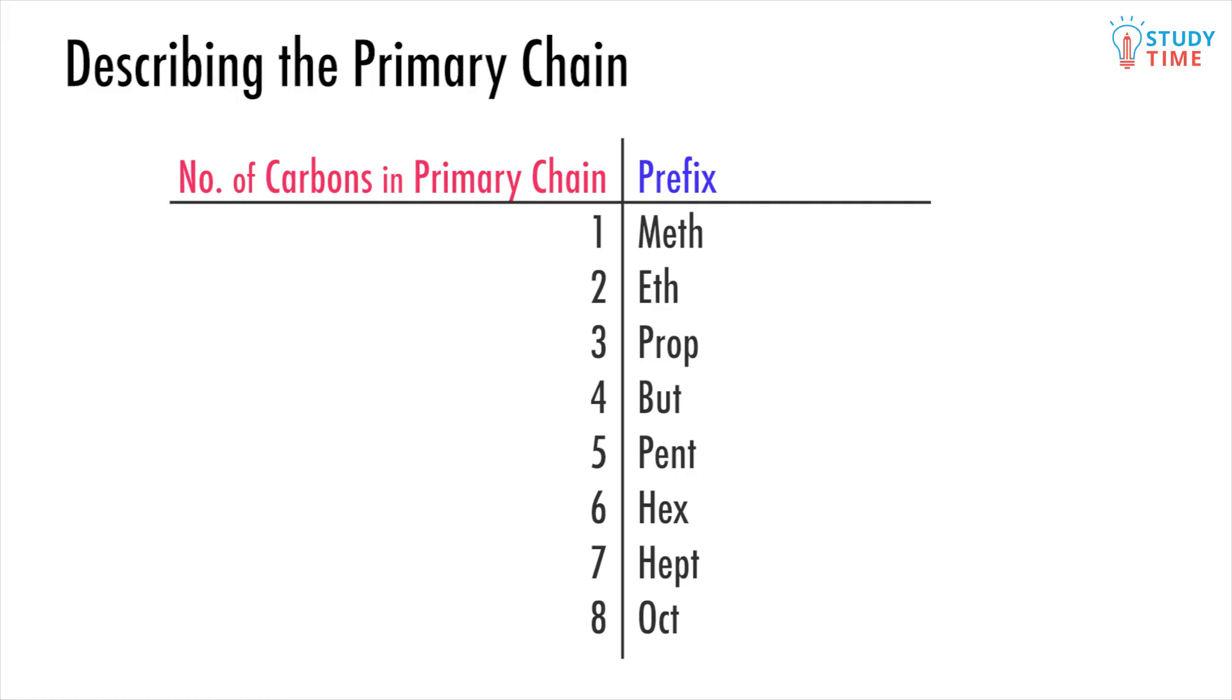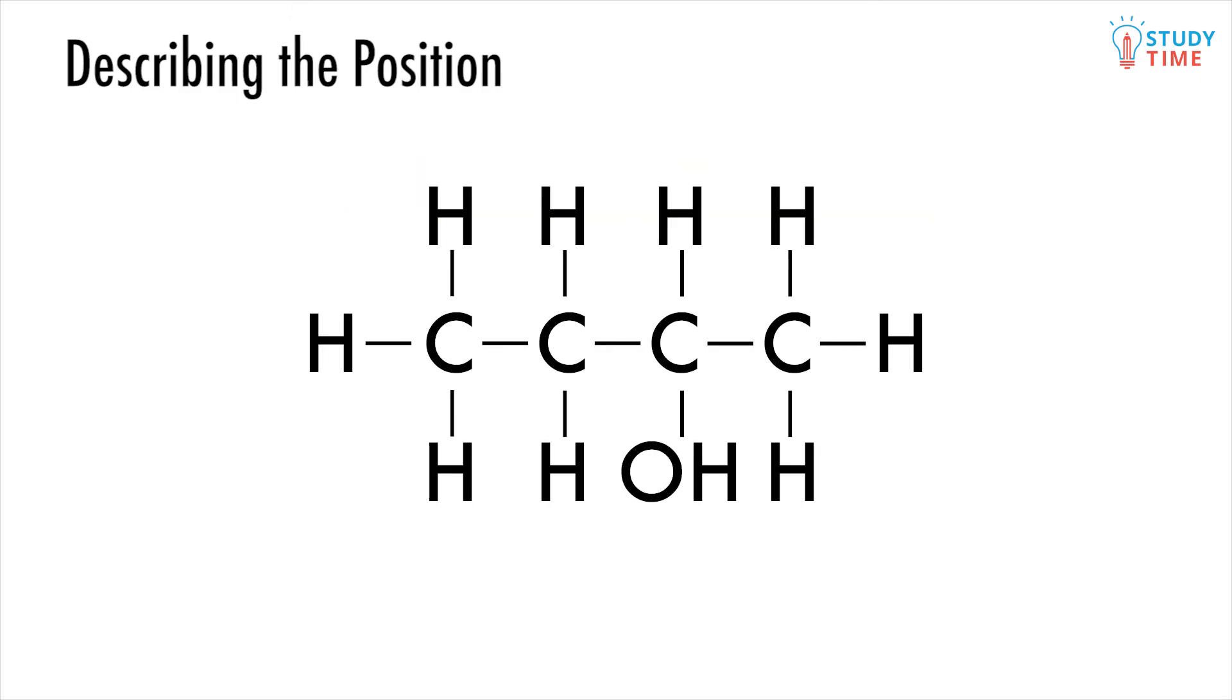Now there's one last important lesson about carbon counting that will make sense after we've discussed groups. Sometimes when naming compounds, you will need to give the location of a particular element or group on the chain. This number acts like a street number and tells us how far along the chain the item we're seeking is.